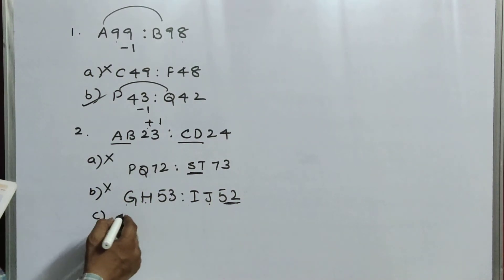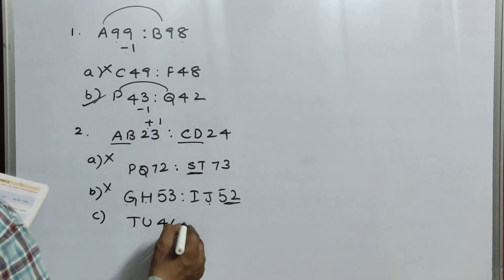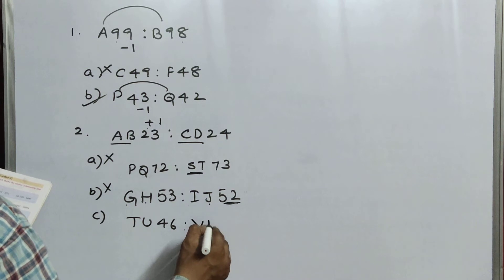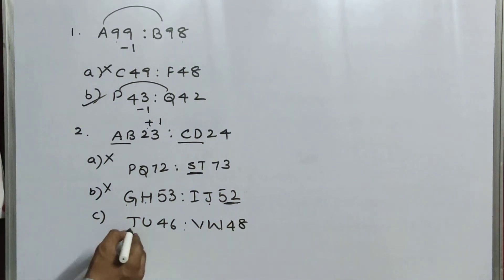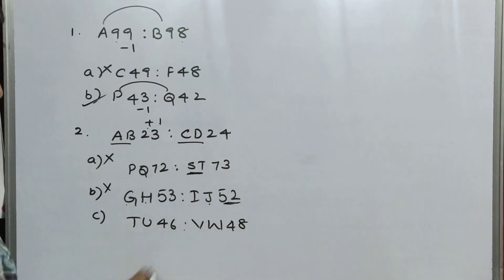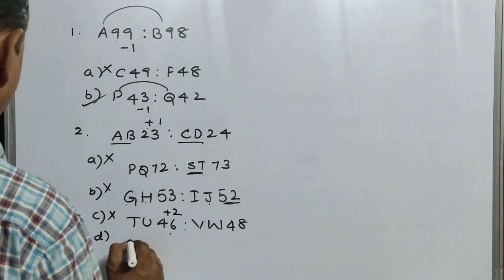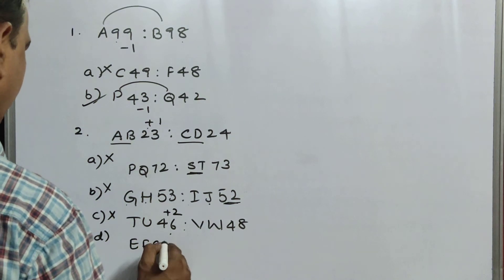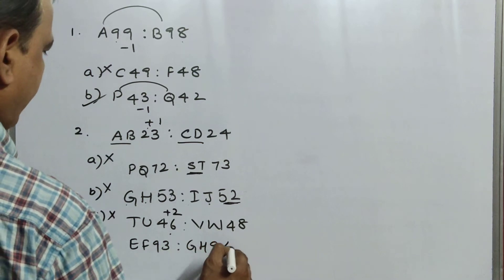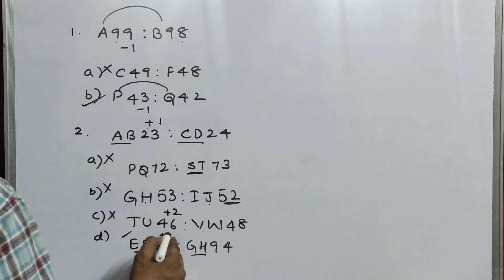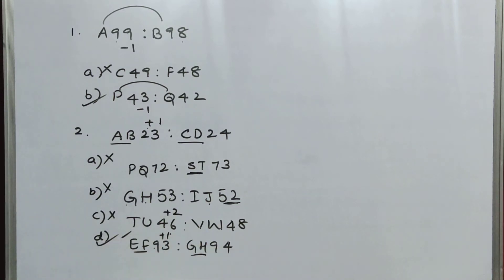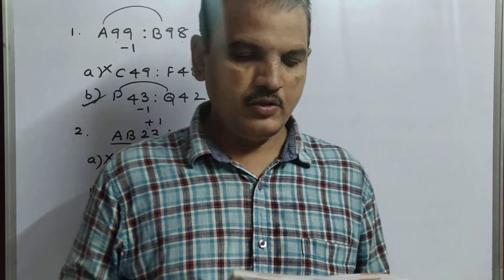Now, go for option C. TU46, VW48. TU, VW. 46 and 48. But here, plus 1 only. But here, it is plus 2. So, option C wrong. So, obviously, what will happen? D. So, D also, once we'll check it, whether it is correct or not. EF93 is to GH94. So, EFGH, correct. 93 plus 1 is 94. So, option D is correct. So, you can do the remaining sums in this way. Is it clear now? That is very easy compared with the 6th page. 7th page is very easy.